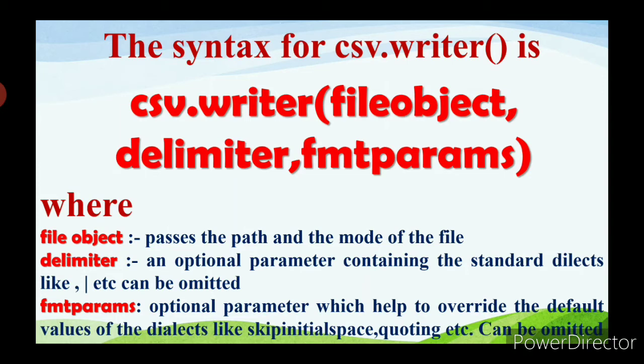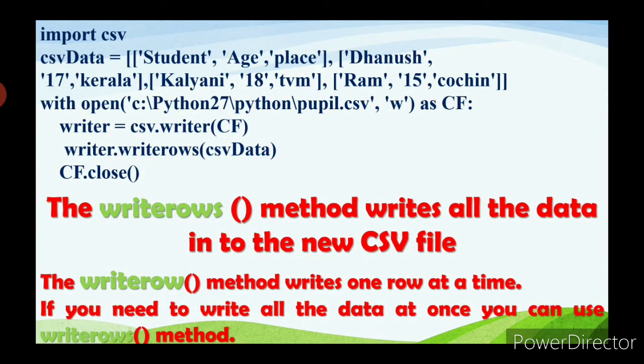The delimiter specifies the path and mode of the file. The delimiter is optional — it contains standard dialects like comma, pipeline, etc., and can be omitted. Formatting parameters are also optional and help to override default dialect values like skip initial space and quoting. You can create a normal CSV file using the writer method with a default delimiter of comma, just like in the reader function.